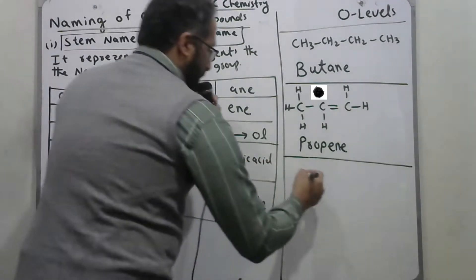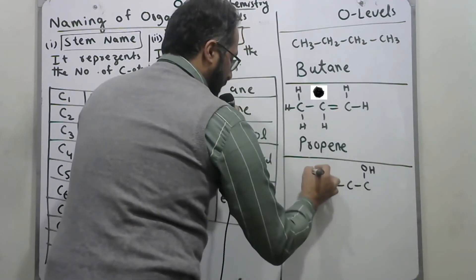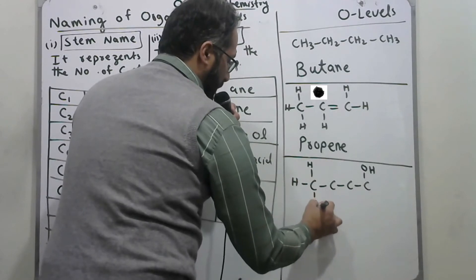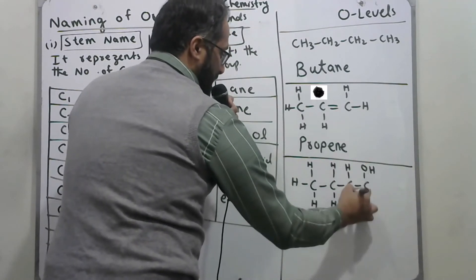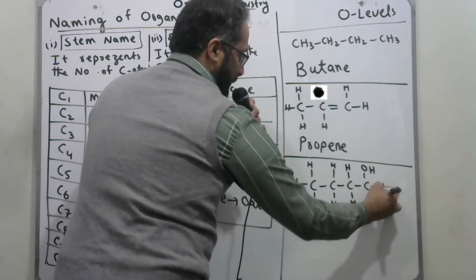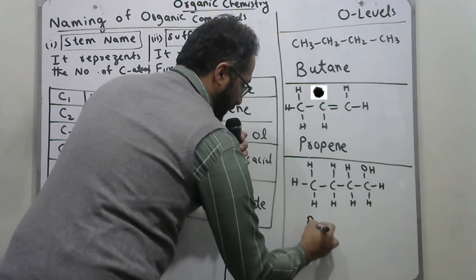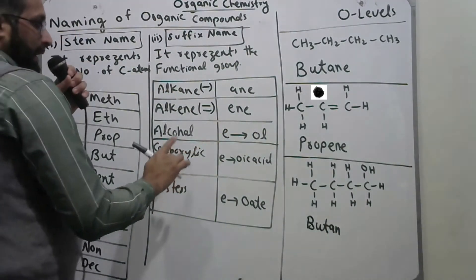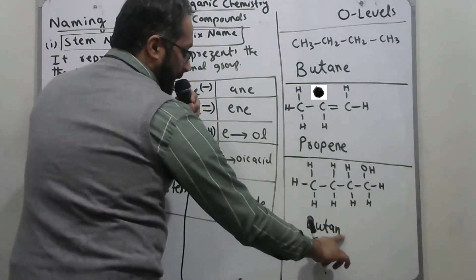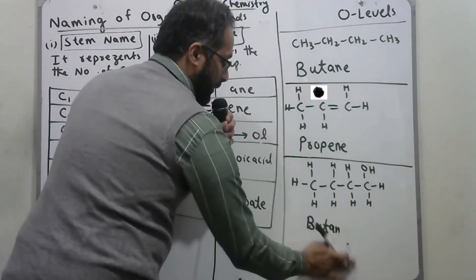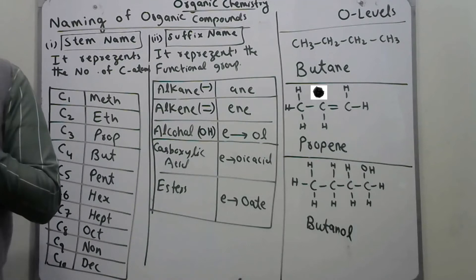Next example: a compound with four carbons containing an OH group. OH is the abbreviation for alcohol. Since there is a single bond, the base name is 'butane'. The rule for alcohols is that you replace the 'e' at the end of the alkane name with 'ol'. So 'butane' becomes 'butanol'.